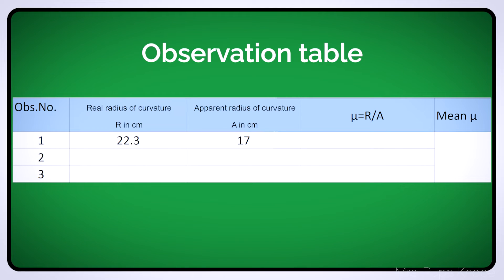In the first part, we took the first concave mirror and the real radius of curvature. We put water on it and took the second reading — the apparent radius of curvature — which is 17 cm. We have to find the refractive index of water: real radius of curvature divided by apparent radius of curvature. 22.3 divided by 17 gives us the value as 1.31. For pure water, the refractive index is 4 by 3, that is 1.33. When performing an experiment, we get some errors and they are allowed, so we get the value as 1.31.